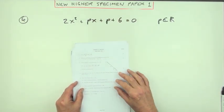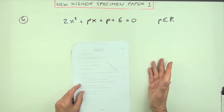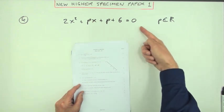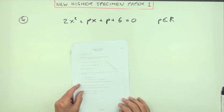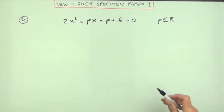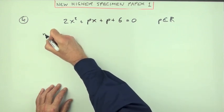Number four from this New Higher Specimen Paper 1. Given that this quadratic equation has no real roots, find the range of values of p that would produce that condition. Let's put that condition down.